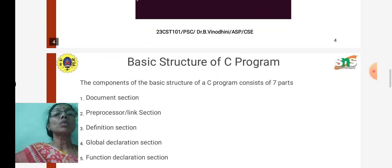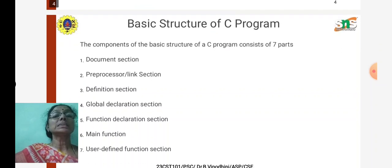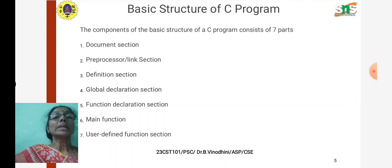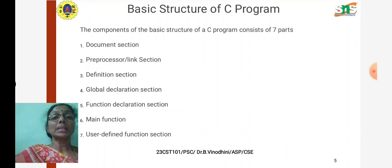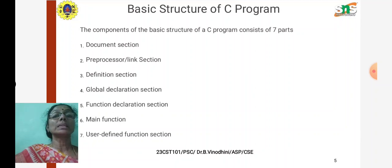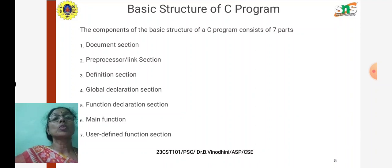Now we will see the seven components of a C program. The first section is the documentation section, where any comments or user indication sentences are included. The second is the preprocessor or link section, where preprocessor directives like header file inclusion, macro definition, and conditional compilation are all defined.